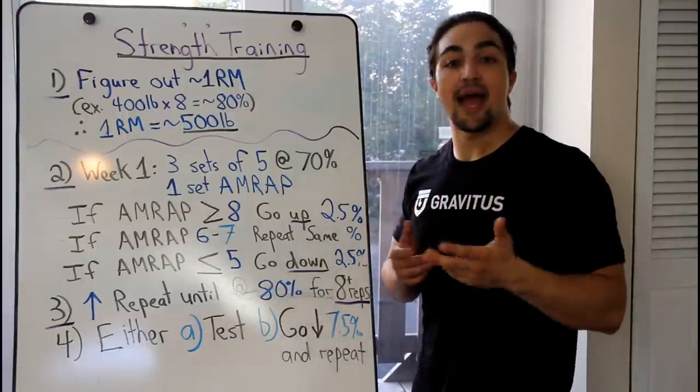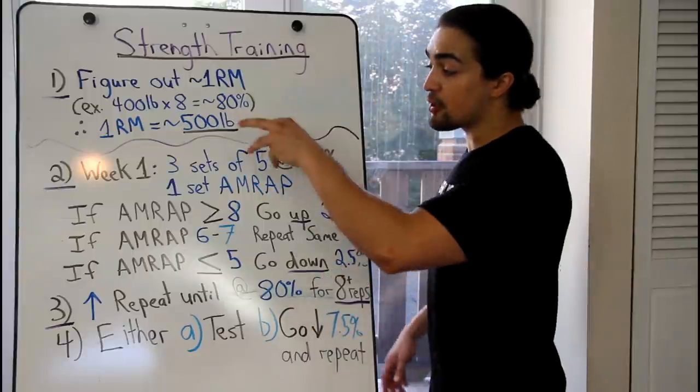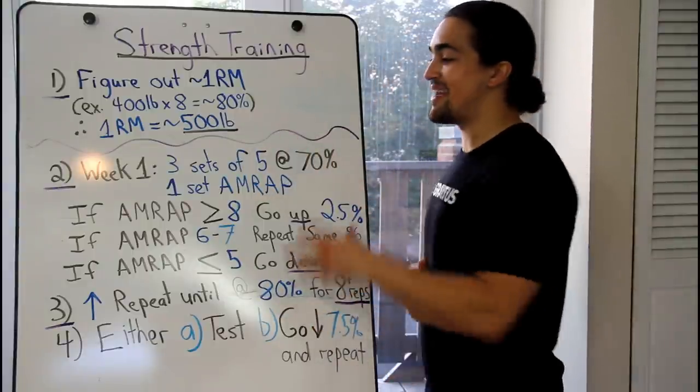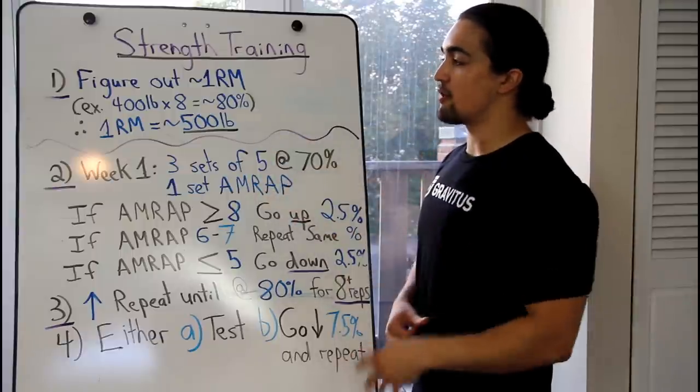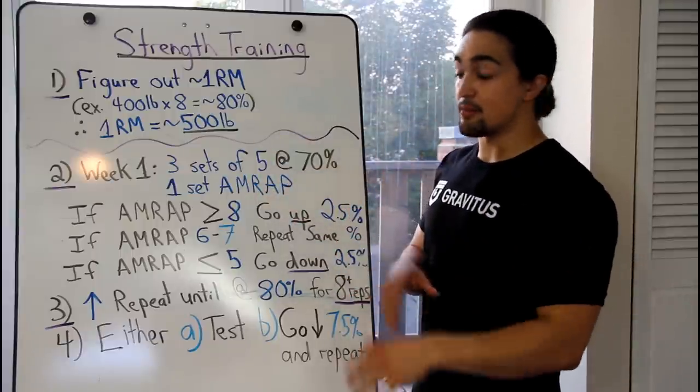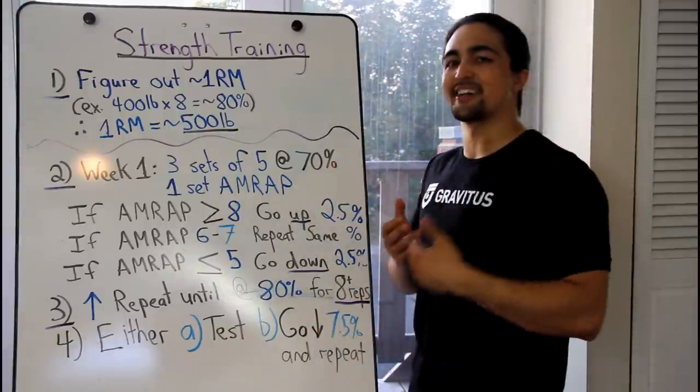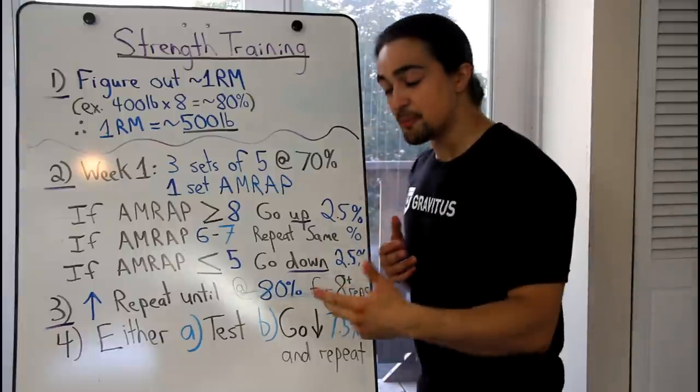And again, in the PDF in the guide, it explains all this, that a calculator actually does the work for you, so you just got to enter how many reps you get, and then it'll enter the equation, it'll figure it out, you know what, you did well, go up, you didn't do so well, stay the same, you did terrible, go down. So I'll do all this for you, but I really want to explain this so you guys understand the science behind it.